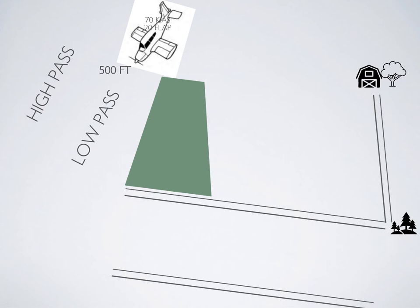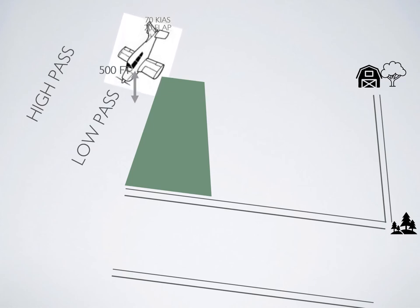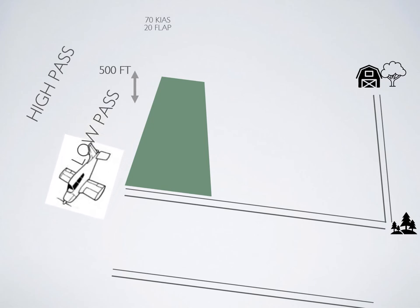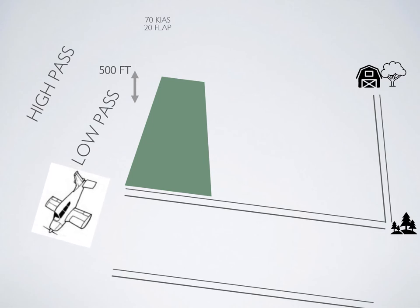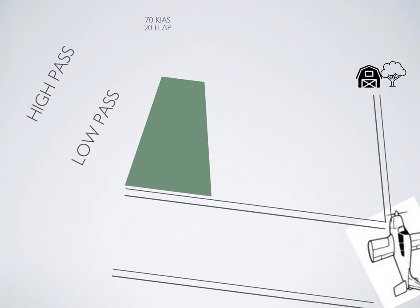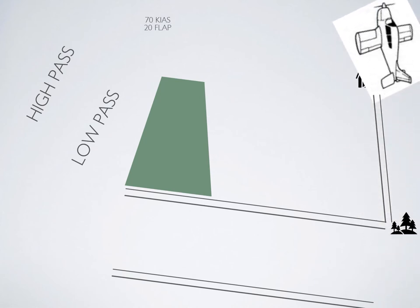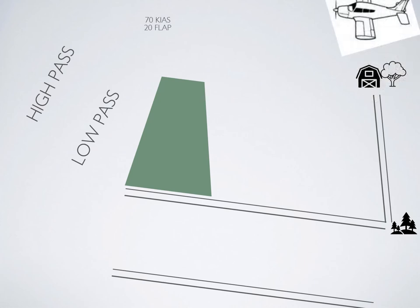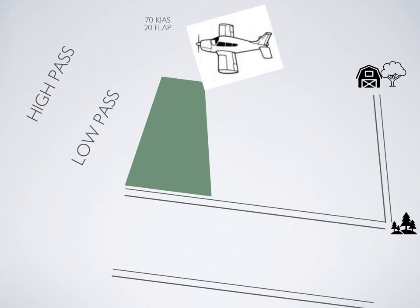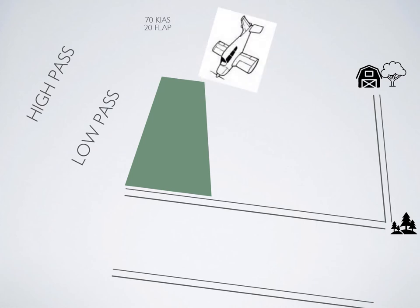With airspeed set, flap in, and trimmed out, begin the low pass — do not descend. Start a timer once you've crossed the threshold; remember each second is about 120 feet. While timing, look over to get a good visual on the field surface: smooth, bumpy, suitable for landing? Once you've timed the field length, retract flap and climb back to 1,000 feet AGL. Back on downwind, do your final pre-landing check and make a pan-pan call or passenger brief if required. Then bring in full flap and prepare for a soft field landing. Since this is a precautionary exercise, we're only simulating the landing, so be prepared to overshoot the field at about 500 feet.